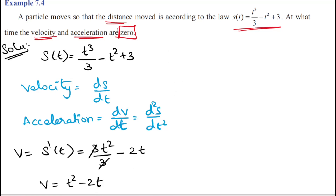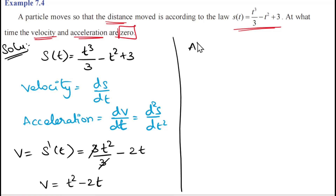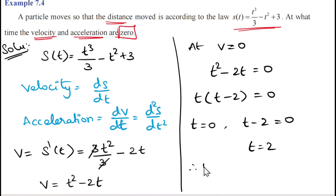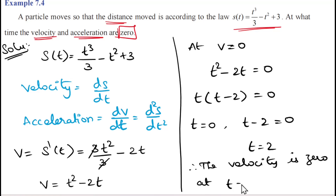Now we set velocity equal to 0. So v = 0 gives t² - 2t = 0. Factoring: t(t - 2) = 0, therefore t = 0 or t = 2. Velocity is 0 at t = 0 and t = 2.